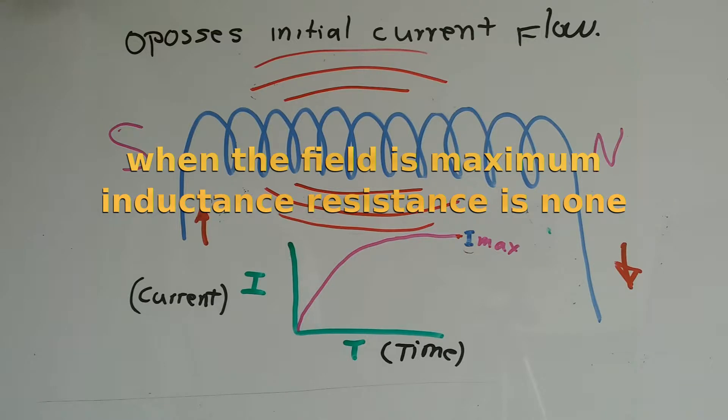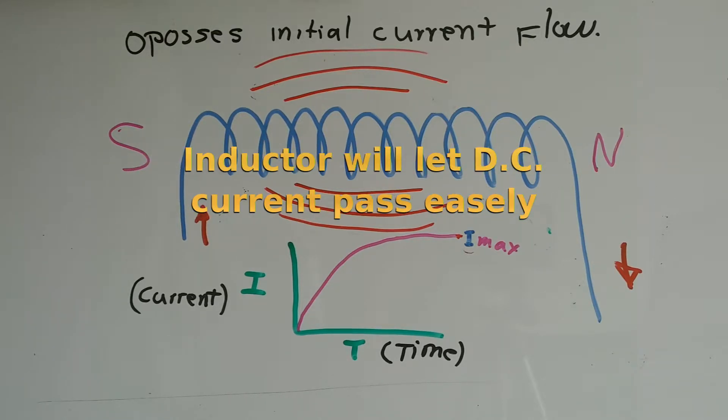To summarize, we can say that an inductor initially opposes current flow when it's first energized.